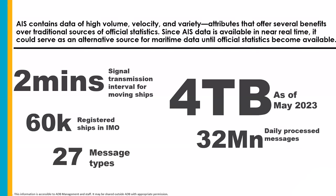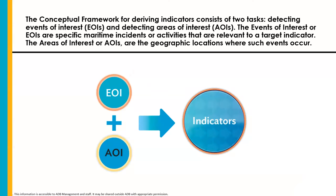Let's first discuss how we derived these indicators from AIS data. While AIS has an extraordinary volume of information, it does not explicitly give information on activities such as port visits, port congestion, and maritime highway traffic and transit. Because of that, we need to develop a set of techniques to derive such indicators from the raw AIS data. The task of deriving indicators can be broken down into two: first, detecting events of interest, or EOIs; and second, detecting areas of interest, or AOIs. EOIs are specific maritime incidents relevant to a target indicator, while AOIs are the geographic locations where such events occur.